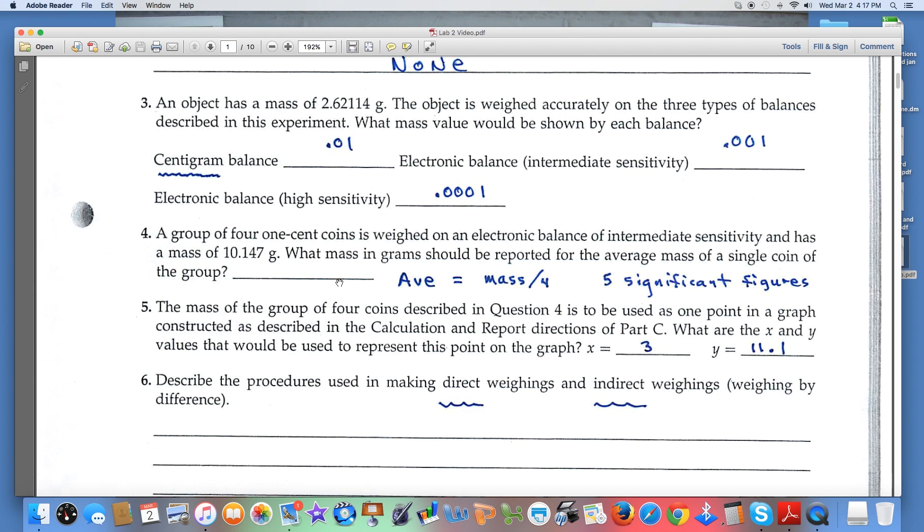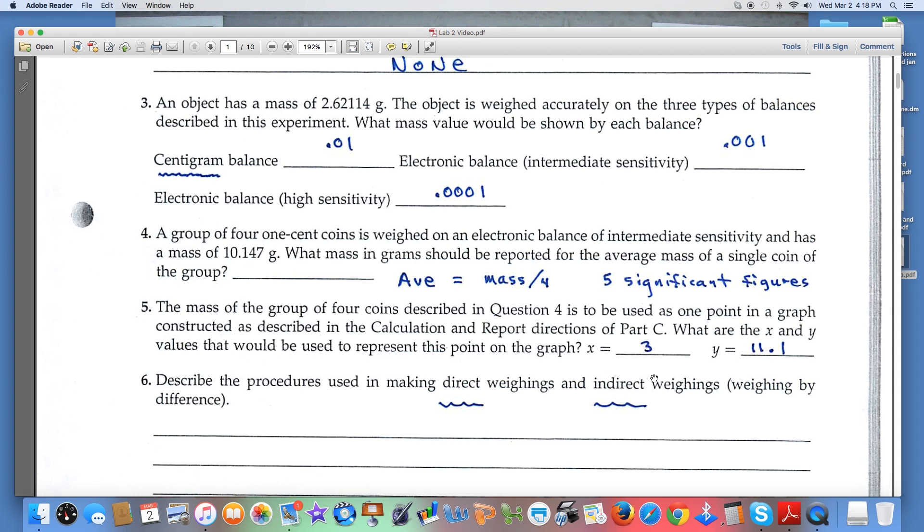Question number five asks what X is and what Y is. Use your own data here to come up with values all the way through this experiment. I've entered numbers, typical numbers but hypothetical, so you wouldn't want to use the same numbers that I've used.